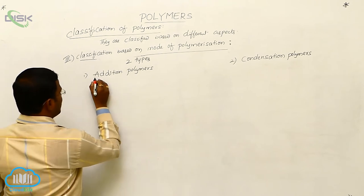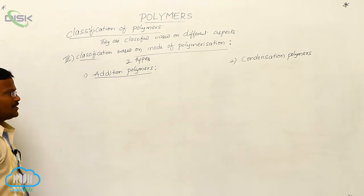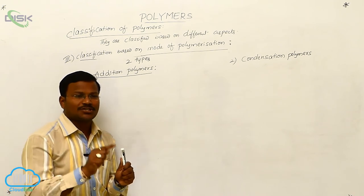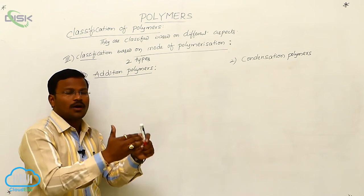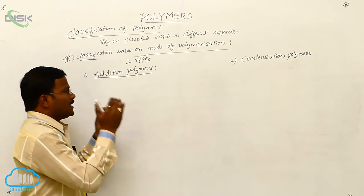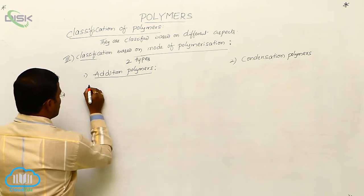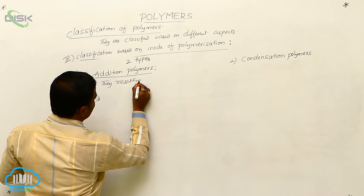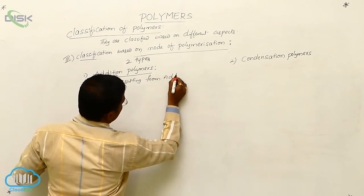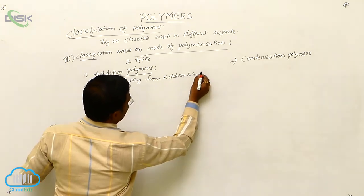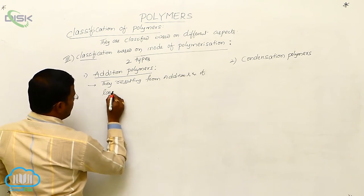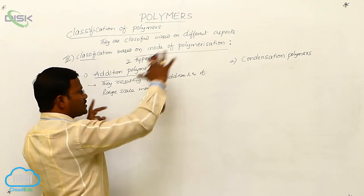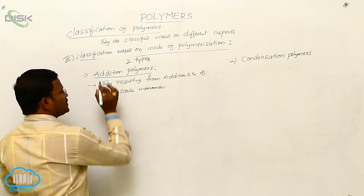Let us learn about addition polymers. Addition polymers are produced from the addition reaction of a large quantity of monomers of the same type or different types. The resulting polymers are called addition polymers.